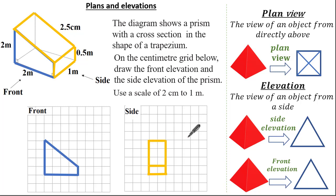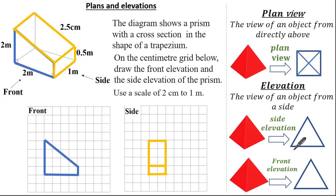That was a tricky question — just remember to do one length at a time, and color coding sometimes helps. In summary: the plan view is the view of an object from directly above, and elevation is the view of an object from a side, whether it's the side elevation or the front elevation. Plans and elevations can come in all sorts of shapes and sizes, but as long as you remember the definition and use your imagination a little, you'll be successful in tackling these questions.